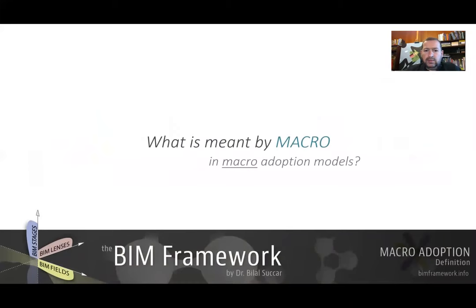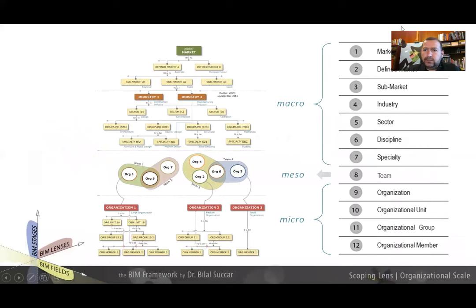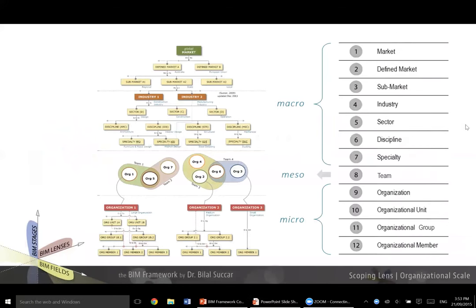So what is meant by macro in macro adoption models? Macro refers to certain scales within the organizational hierarchy model, which includes 12 scales. The 12 scales range from a global market at the top, like number one, to the organization member, which is the individual. When we refer to macro scales, we are really referring to the first seven.